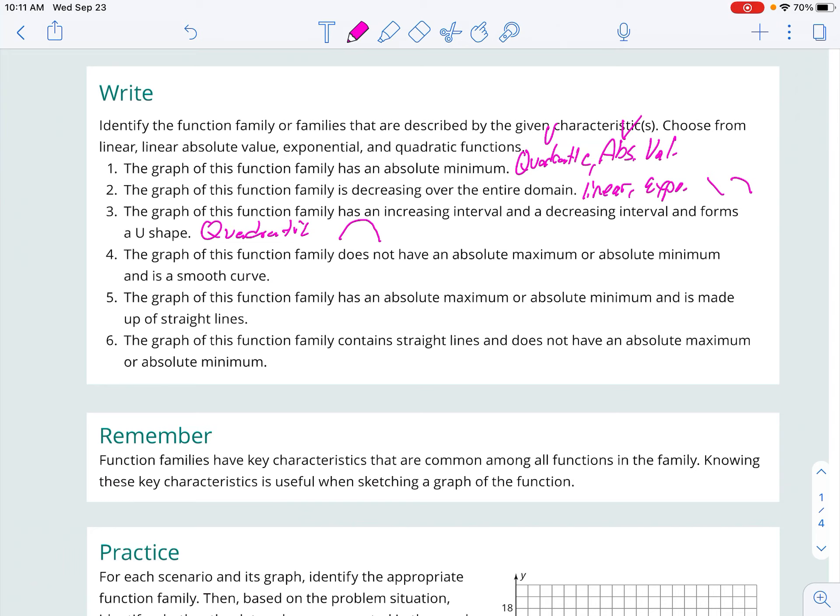Graph of the function family does not have an absolute max or min and is a smooth curve. So no maxes and min, so it can't be quadratic, it can't be absolute value. And it's a curve, so that is an exponential. Exponentials can look a whole bunch of different ways. It's a smooth curve, and there is no max or min.